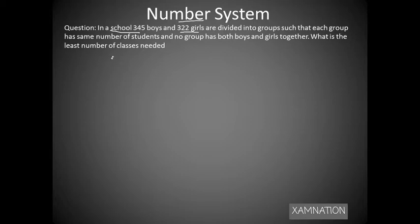So we have boys, which is 345. First we need to find out the common factors, so that would be 3, 5, and 23. We have girls, which are 322, so the common factors would be 2, 7, and 23. So here we can see that 23 is the common factor.